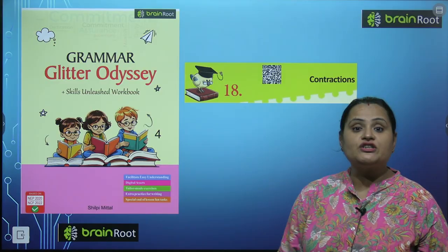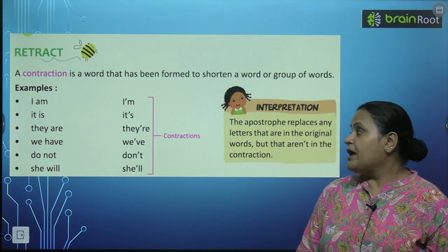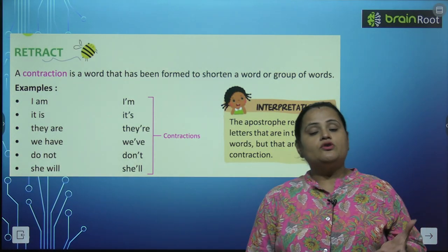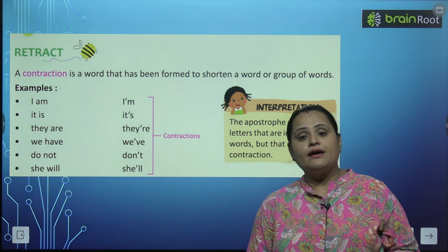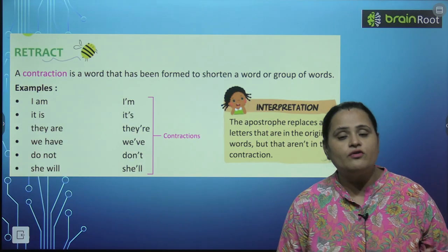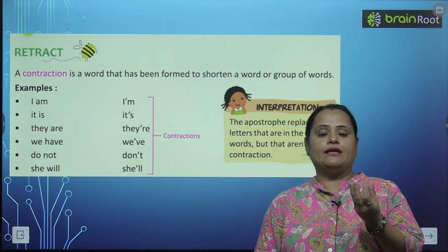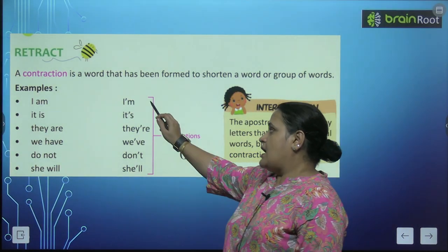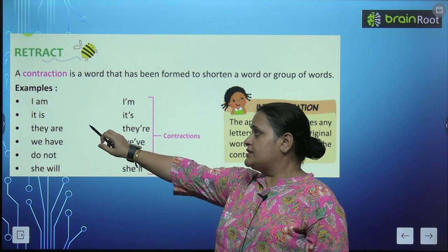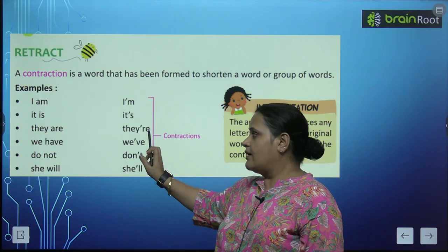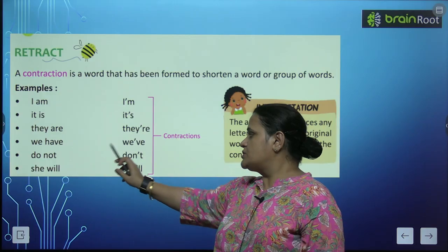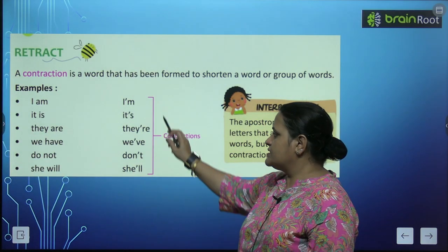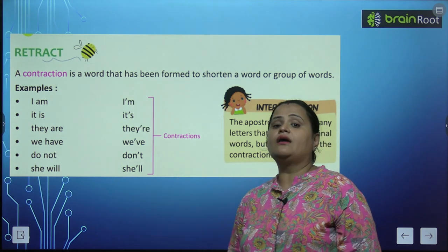So आपको पता है के Contractions क्या होते हैं? A contraction is a word that has been formed to shorten a word or group of words. Contraction एक वो word है बच्चो जो बनाया गया है किसी group of words को या किसी word को छोटा करके short form में लिखने के लिए. जैसे के I am की short form है I apostrophe M. It is → it's, they are → they're, we have, do not → don't, she will → she'll.